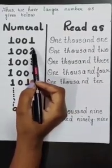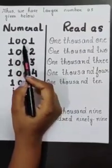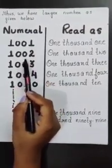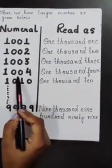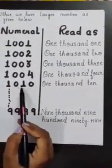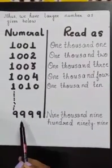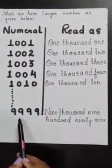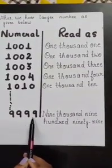When you continue counting numbers after 1000, you will get 1001, 1002, 1003, 1004, 1010, and so on. At last, you will get the largest 4-digit number, that is 9999.